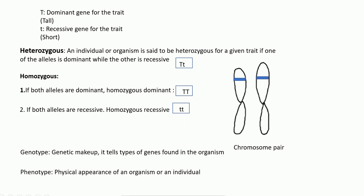Phenotype is the physical appearance of an organism. In a heterozygous organism with capital T and small t, the dominant allele masks the recessive, so the phenotype is a tall plant. In homozygous dominant the phenotype is also a tall plant. In homozygous recessive with small t and small t, the phenotype is a short plant. I hope this video was helpful — I will come up with more videos on genetics. Thank you very much.